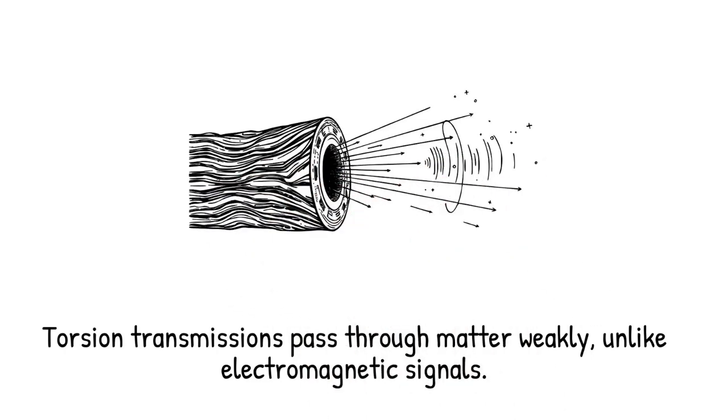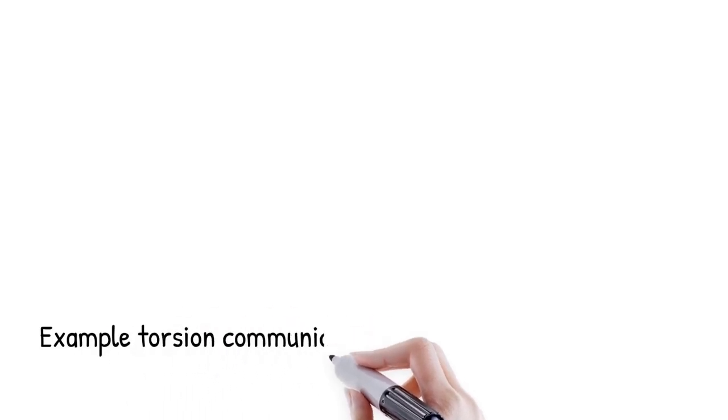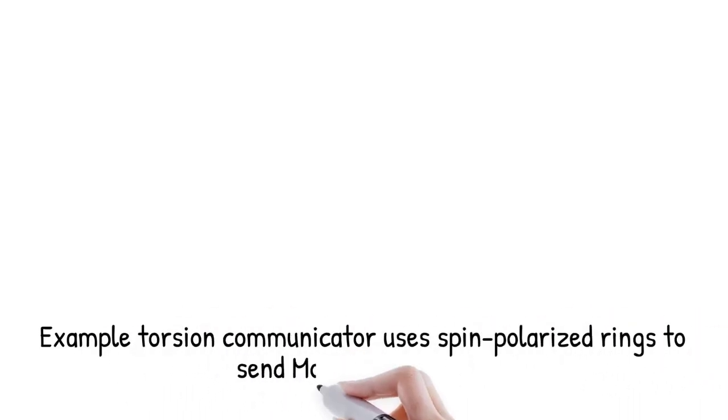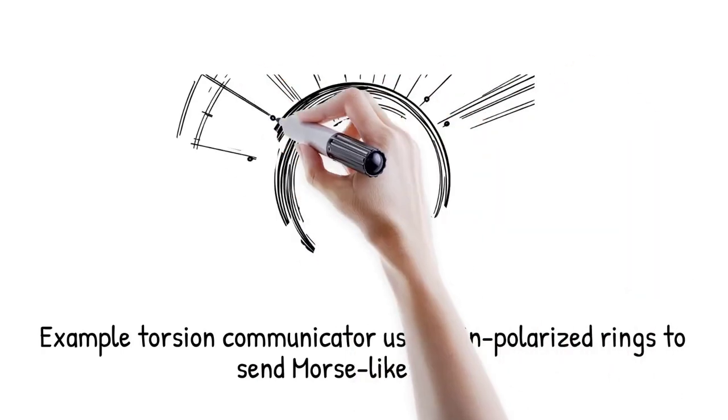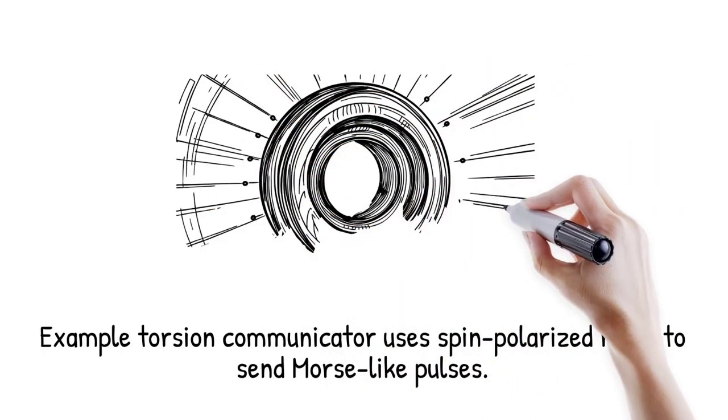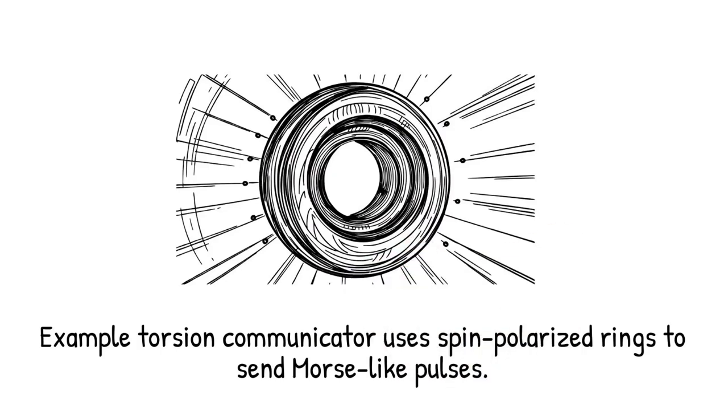Unlike electromagnetic signals, torsion transmissions would interact weakly with charged matter, potentially passing through bulk material with little attenuation. However, without established torsion wave equations, the fidelity and range of such communication remain purely conjectural, akin to twisting a rope back and forth to convey a message via the twist itself rather than by sending waves along its length.